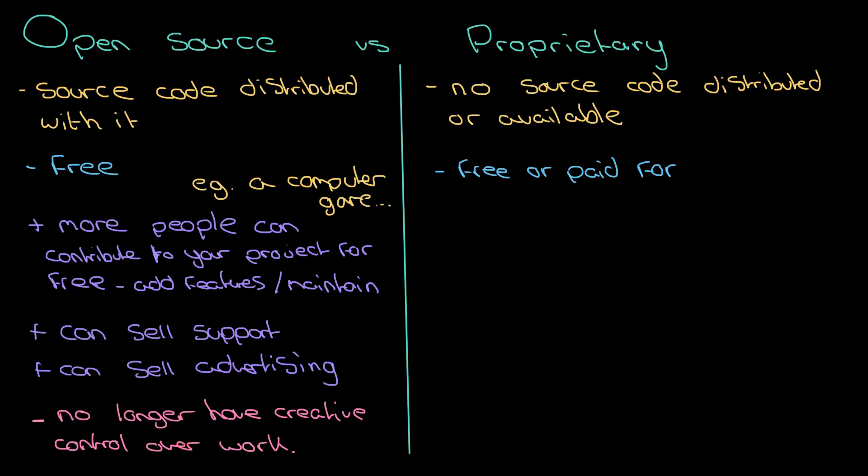With proprietary software, one big thing is that you can sell it. You can just sell the software itself. You can go through the free model if you want to, but you have got the option to sell it.